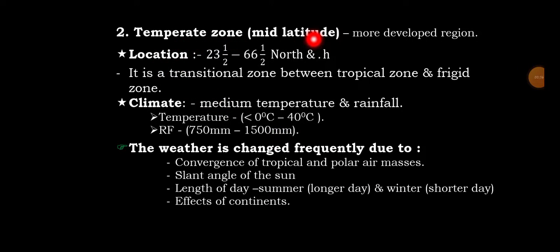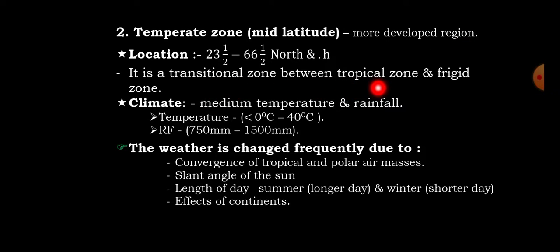Hello students, hello everyone. My name is Mr. Bahru. Today's lesson topic is the Temperate Zone. The Temperate Zone is a more developed region of the globe. It is a transitional zone between the tropical zone, or hot climate, and the frigid zone, or cold climate. It is located between 23.5 degrees to 66.5 degrees north and south.